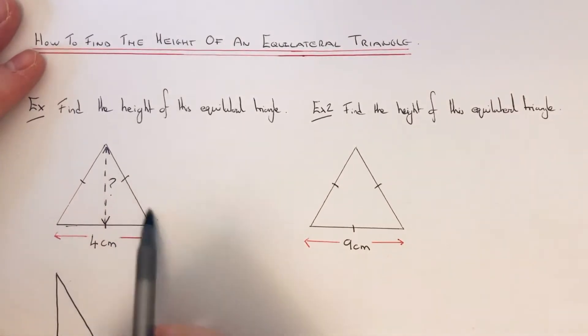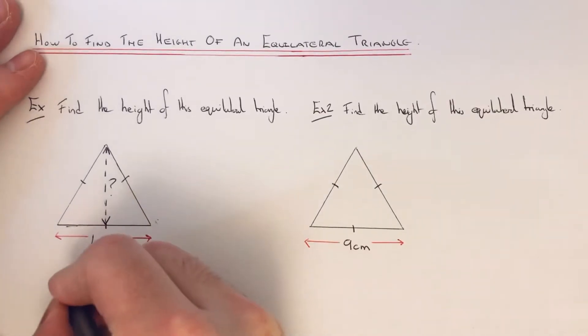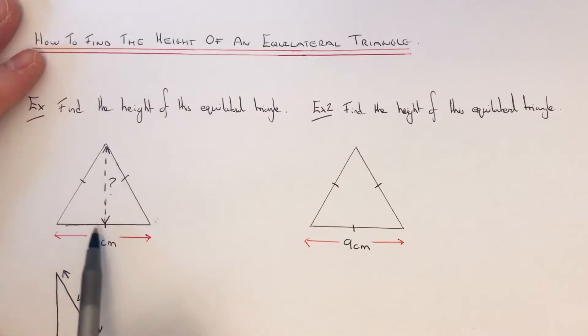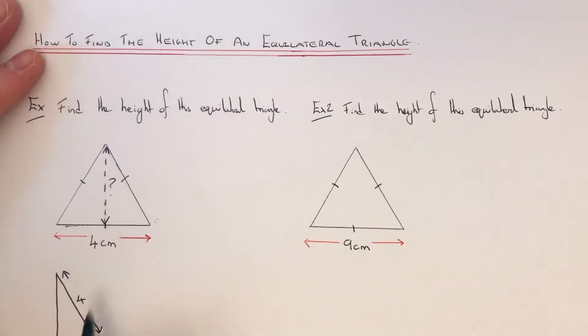Okay, so all the sides in the equilateral are four centimeters, so this length here would be four. The length of the bottom edge was four, but we've only got half of it, so half of four is two.